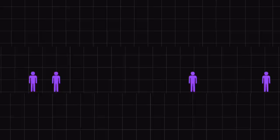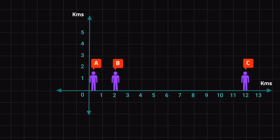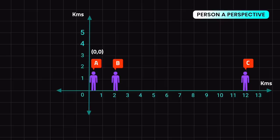Imagine persons A, B, and C standing still. Consider the axes in kilometers and see positions from person A's perspective. Person A is at (0, 0), person B at (2, 0), and person C at (12, 0). From here we can clearly see the distance between persons B and C is 10 kilometers.